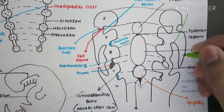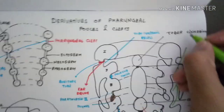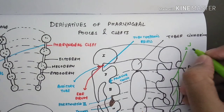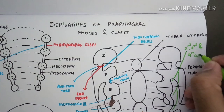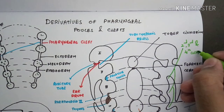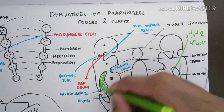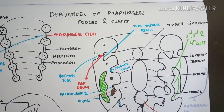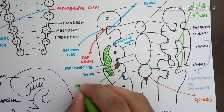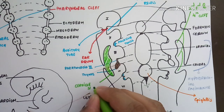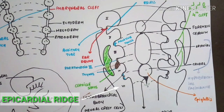That's all for the pouches. For the clefts: the first cleft forms the external auditory meatus, or ear canal. The second, third, and fourth pharyngeal clefts disappear because the second arch and the epicardial ridge protrude and fuse with each other, forming a gap in between — shown in green here — called the cervical sinus.